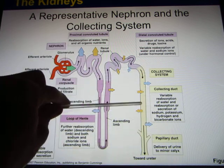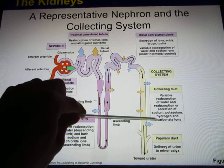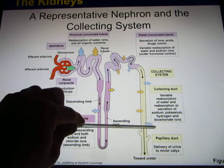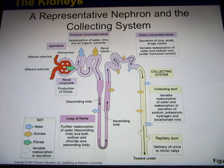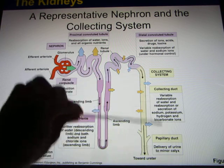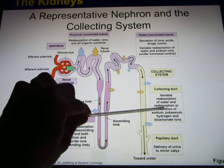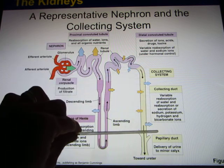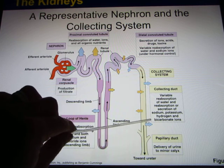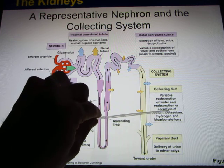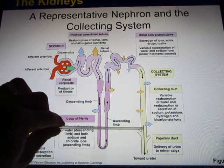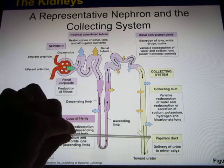Now look at this part with the dashed line. This part can be regulated based on your body's needs. If you drink a lot of water, your urine is very diluted. If you don't drink enough, your urine is very concentrated. The reason is this region — it can take more or less water back based on your body's needs. Not just water; also hydrogen ions and salt, based on your body's needs. It can take more or take less.